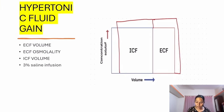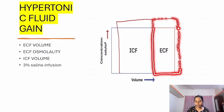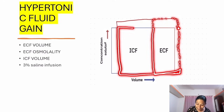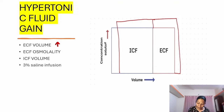In hypertonic fluid gain — seen with 3% saline infusion — you are acquiring something with a very high solute level, so ECF volume increases and ECF tonicity increases. ICF must also increase its concentration to match; to become hypertonic it must lose fluid to ECF. So: ECF volume increases, ECF osmolality increases, and ICF volume reduces.